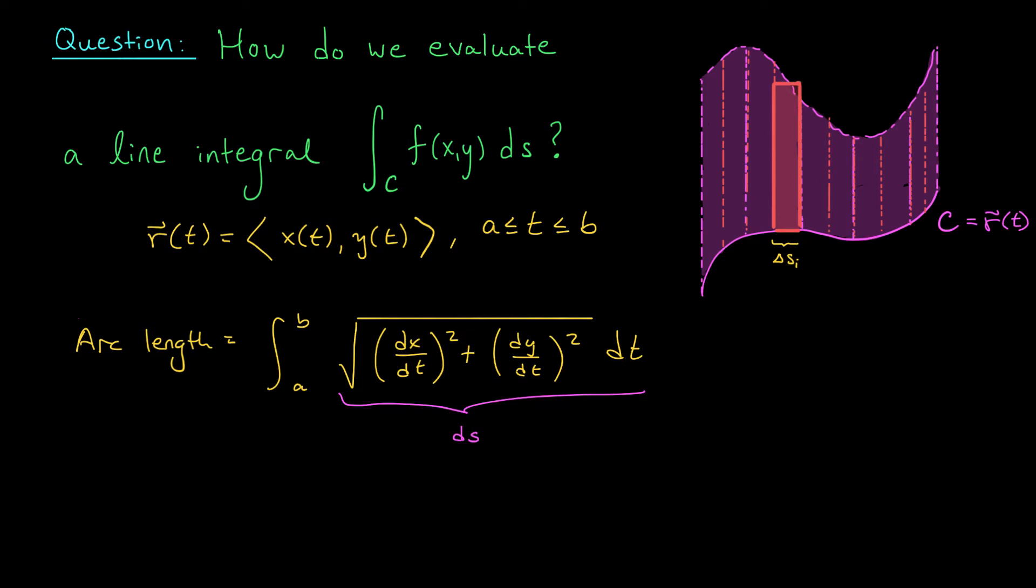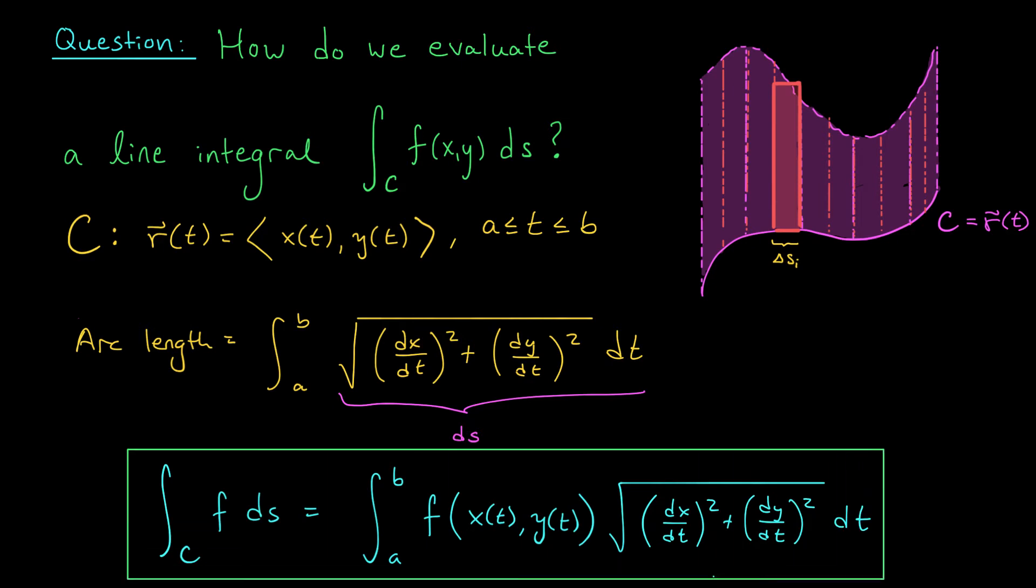So now our goal is clear. We want to find a way to describe our curve C using a parametric equation. If we could do that, if our curve C is traced out by r(t), with t going from a to b, then our line integral, the integral over C of f ds, can be written as the integral from a to b of f(x(t), y(t)) times the square root of (dx/dt)^2 + (dy/dt)^2 dt. This is an integral in just one variable t, something that we've known how to handle since Calc 2. Okay, enough with the theory. Let's put this formula to use in an example.